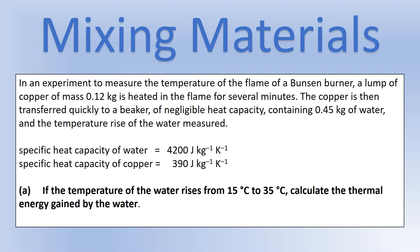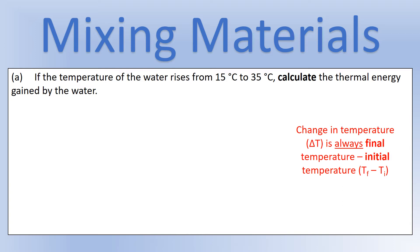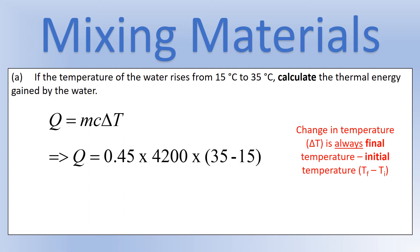Pause the video now and have a go at calculating the thermal energy gained by the water. The equation to use is Q = mcΔT, since we're not dealing with a state change, just a temperature rise. Delta T is final temperature minus initial temperature, TF minus TI. Plugging the numbers in — mass in kilograms and specific heat capacity in joules per kilogram — and rounding to two significant figures gives us the thermal energy gained by the water in joules.